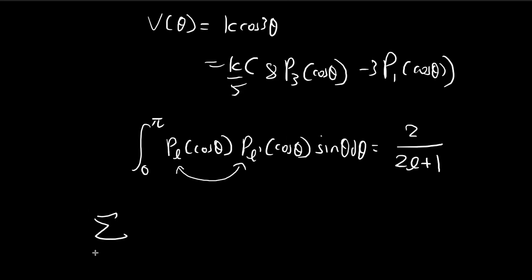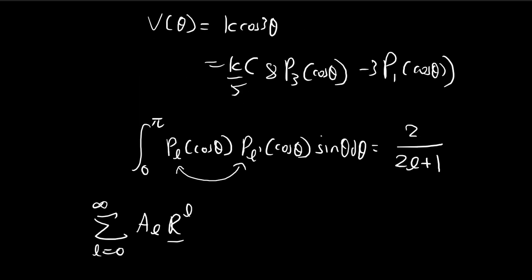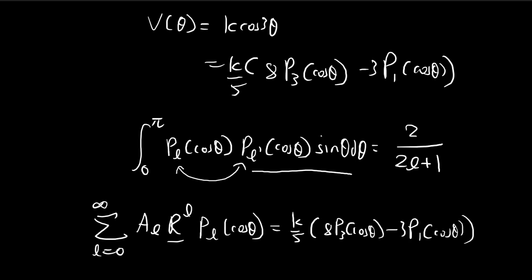Let's write it out. We're on the surface of the sphere so we use big R. This expression is equal to k/5 times the sum. If we multiply both sides by P_L(cosθ) sinθ dθ and integrate, all terms disappear except where L equals 3 and L equals 1, because those are the only terms present. So only A1 and A3 are going to survive.